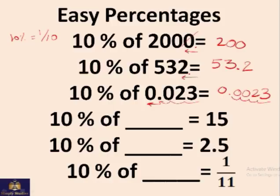Here it was after three places, and in our answer it is after four places. 10% of something is 15, that something must be 10 times this, which is 150. 10% of something is 2.5, that something must be 25, 10 times this. 10% of something is 1 over 11, so it must be 10 over 11.